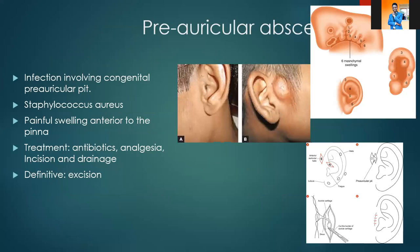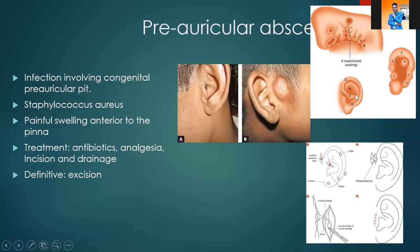We also have what we call pre-auricular abscesses. The auricle originates from six mesenchymal swellings that fuse together to give you the ear — one could say God is an artist.